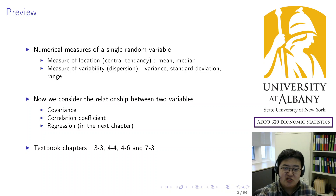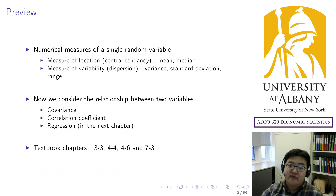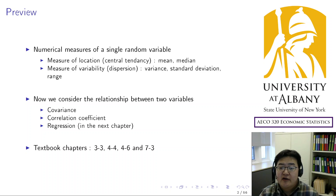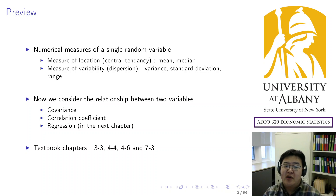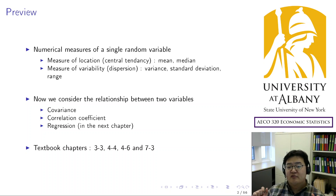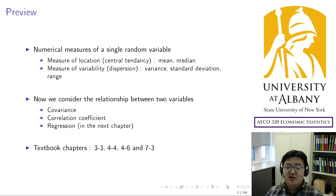Remember in Chapters 3 and 4 we learned some important measures of a random variable. At the time we learned mean and median as measures of location or central tendency, and also variance, range, and standard deviation as measures of variability or dispersion. Those measures summarize the shape of one random variable.